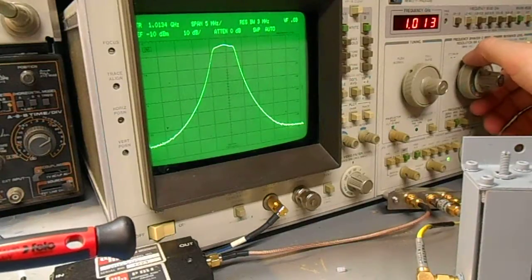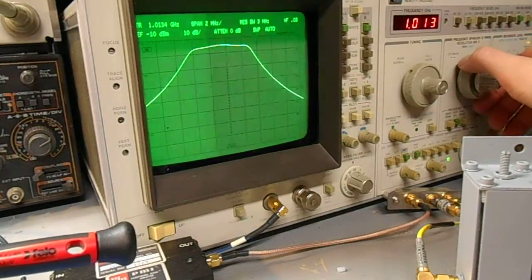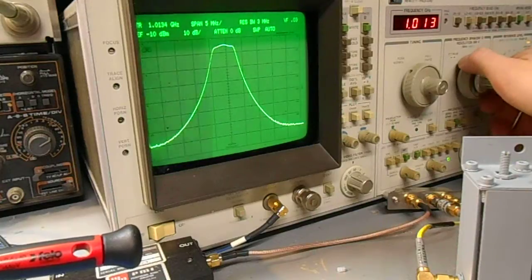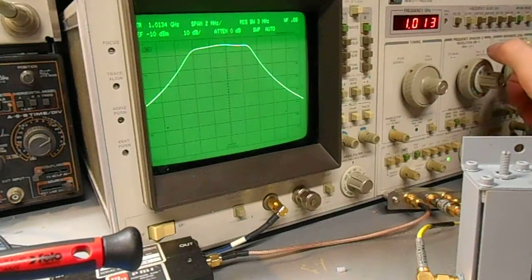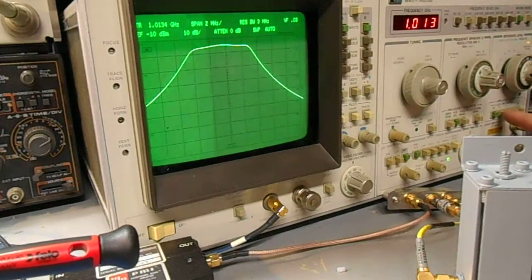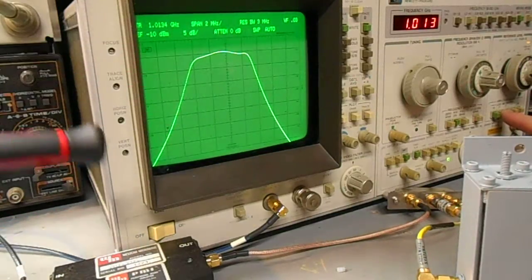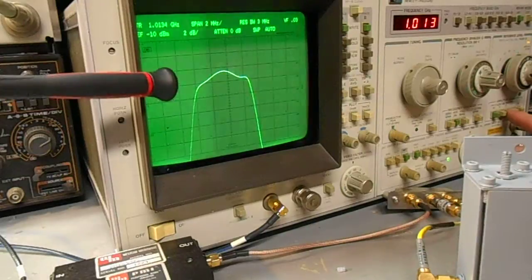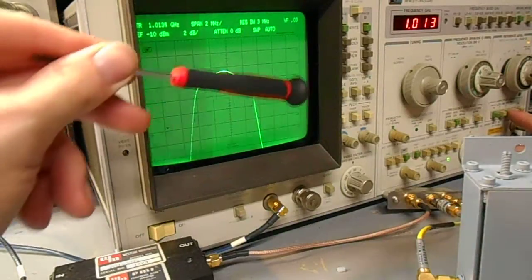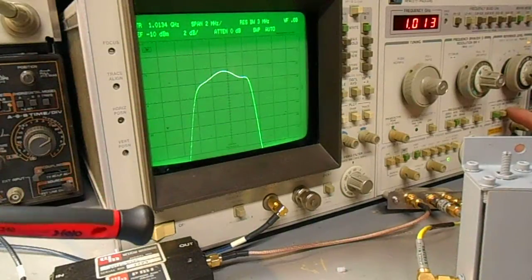That's 5 dB per division. 5 MHz per division I mean. 2 MHz per division. That's 5 dB per horizontal division. 2 dB per horizontal division. 2 MHz per horizontal division.